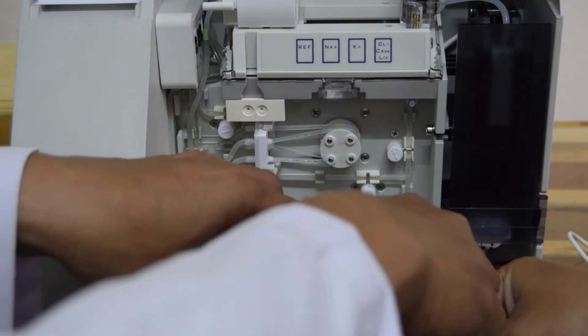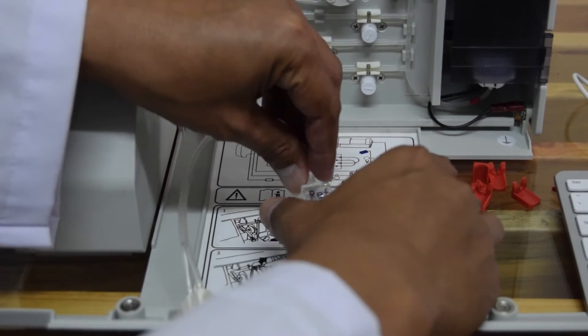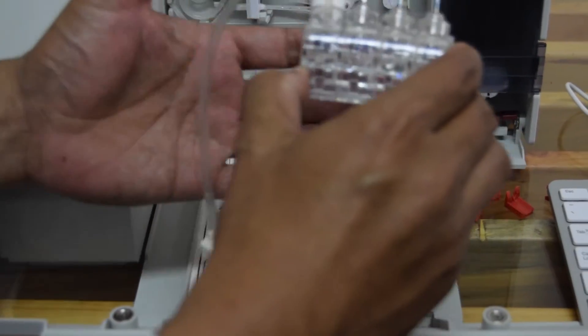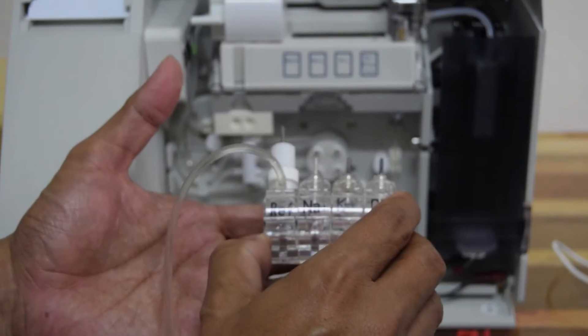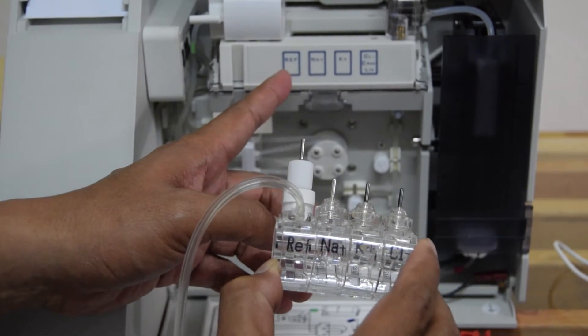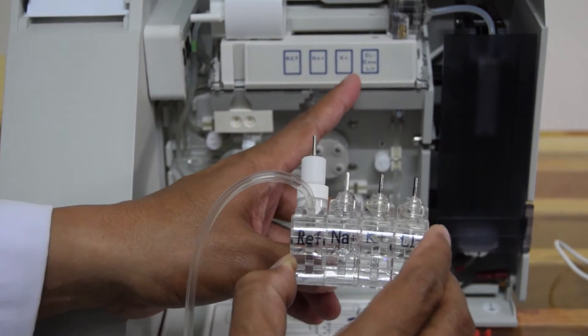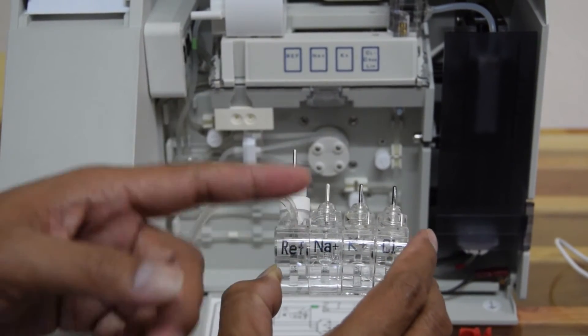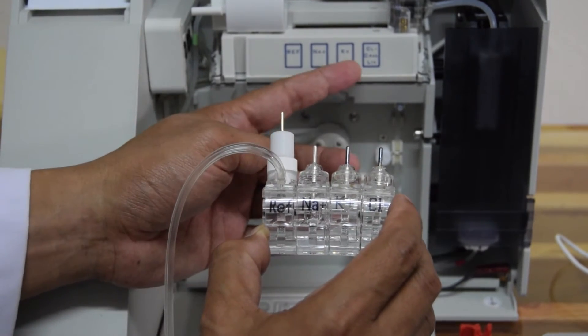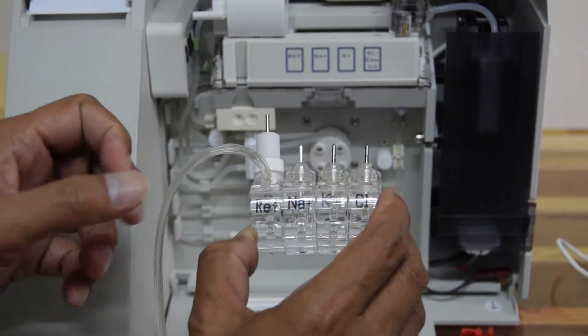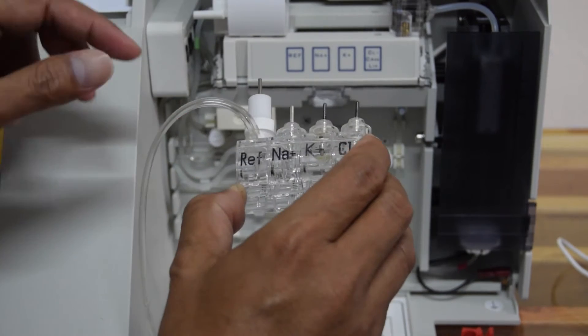Seperti ini. Jadi, ini ada elektroda. Elektroda dari alat SmartLine. Susunannya seperti ini. Seperti pada alat. Ref, Natrium, Kalium, dan Kloride. Jadi, yang paling kanan adalah kloride. Bisa juga mengganti dengan kalium atau litium. Jadi, dia bisa berubah sesuai dengan apa yang dibutuhkan.